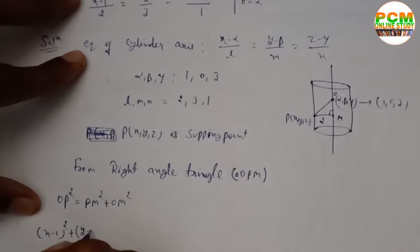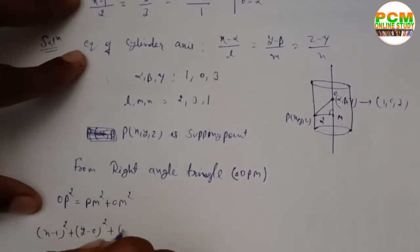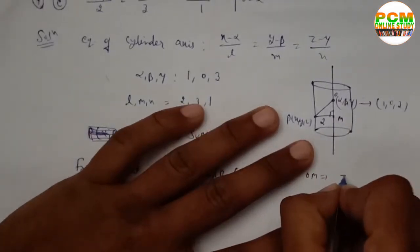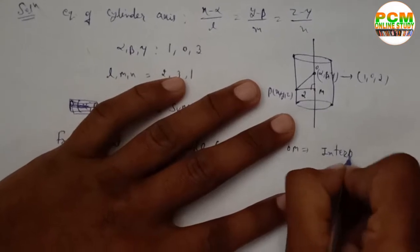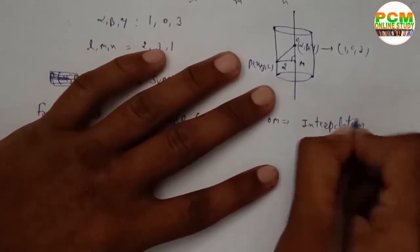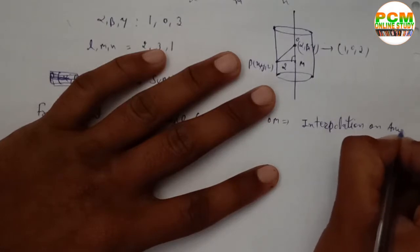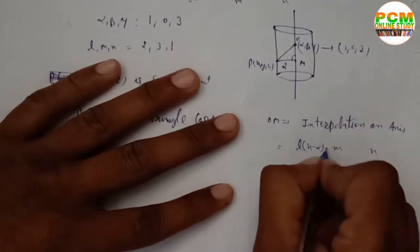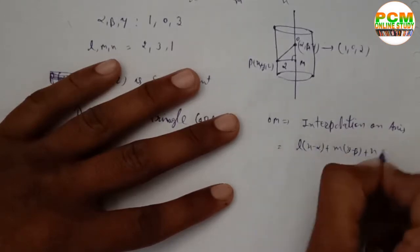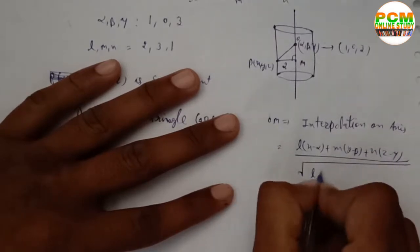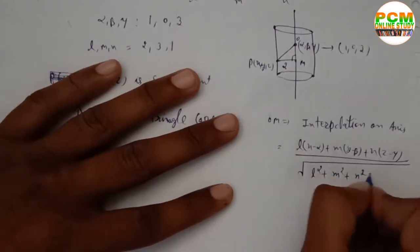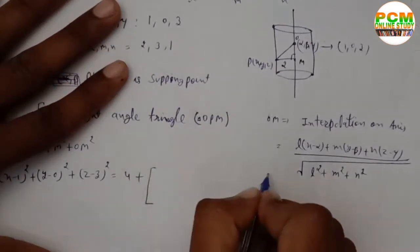OP is the distance between P and O, so OP² = (x−1)² + (y−0)² + (z−3)². OM is the projection of OP onto the cylinder's axis, given by the formula: OM = [l(x−α) + m(y−β) + n(z−γ)] / √(l²+m²+n²).